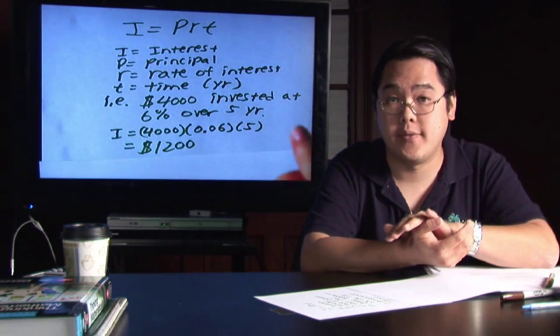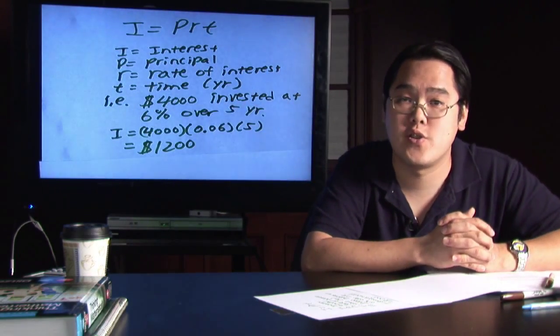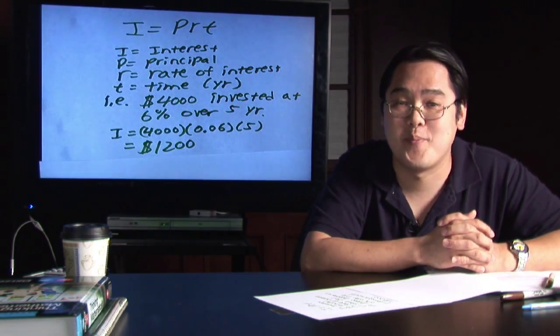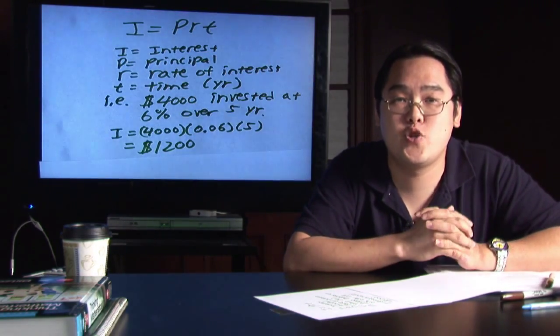So, by the end of five years, under these conditions, you'll have over $5,000 in your account, which is pretty darn sweet. My name is Jimmy Chang and that is exactly how you calculate interest earnings.